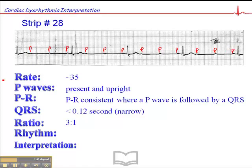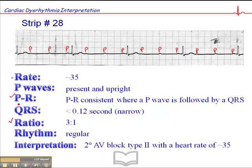So we have a consistent 3 to 1 ratio and the rhythm is regular. When you have a slow heart rate and a ratio of 3 P waves per QRS with a consistent PR interval, this is a second-degree AV block type 2 with a heart rate of 35 beats per minute.